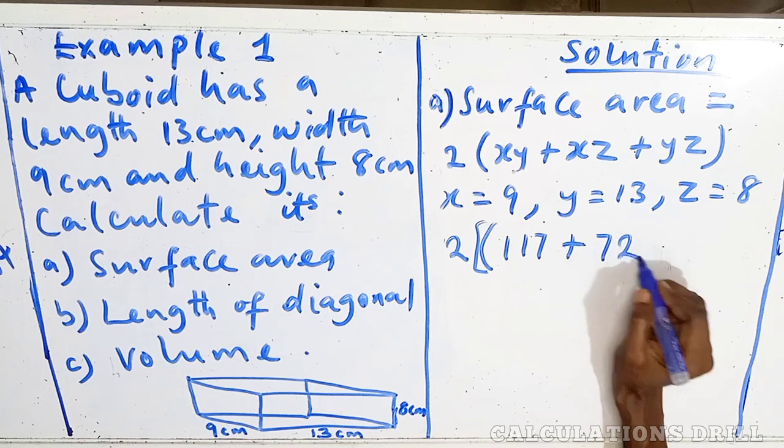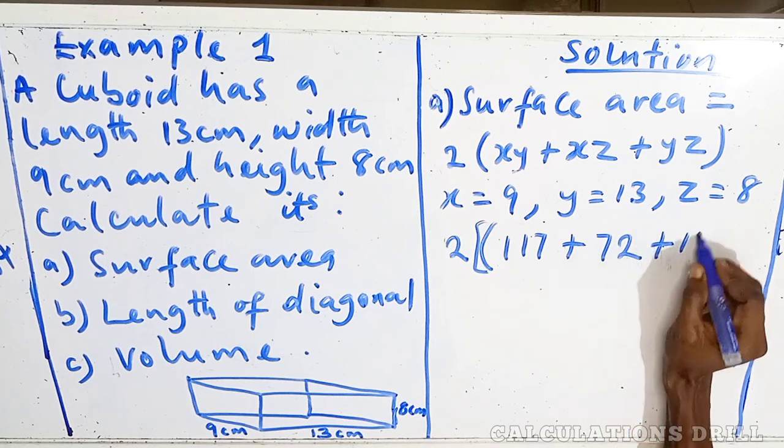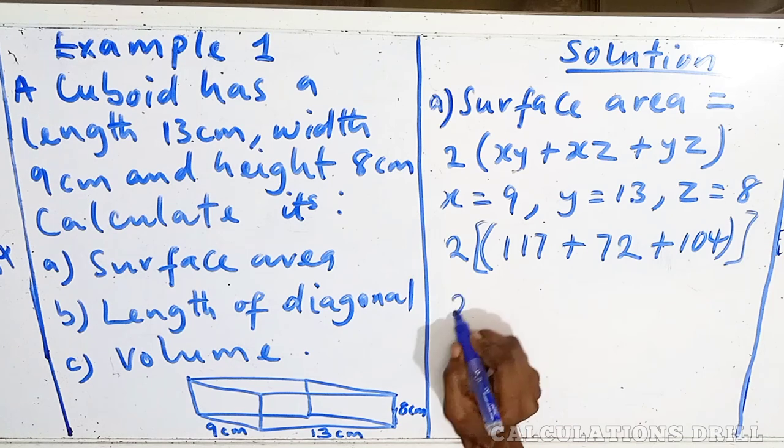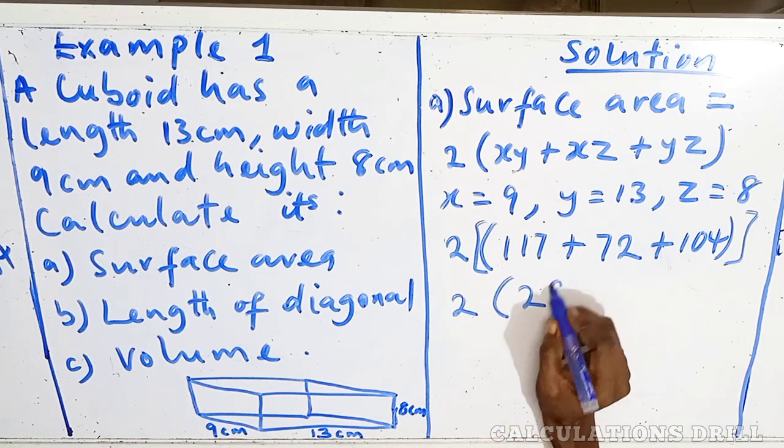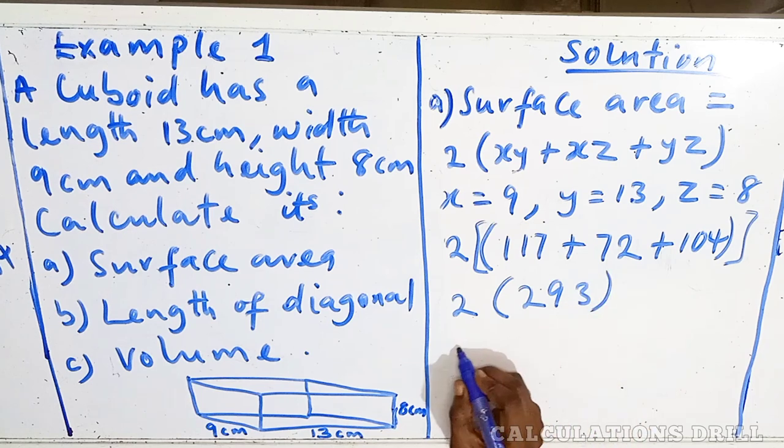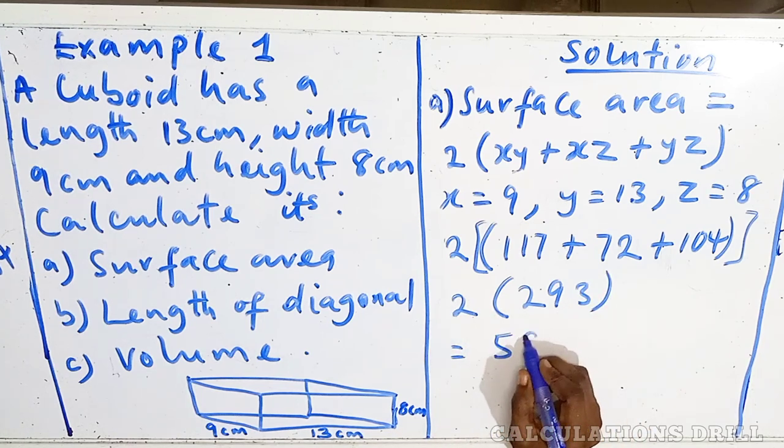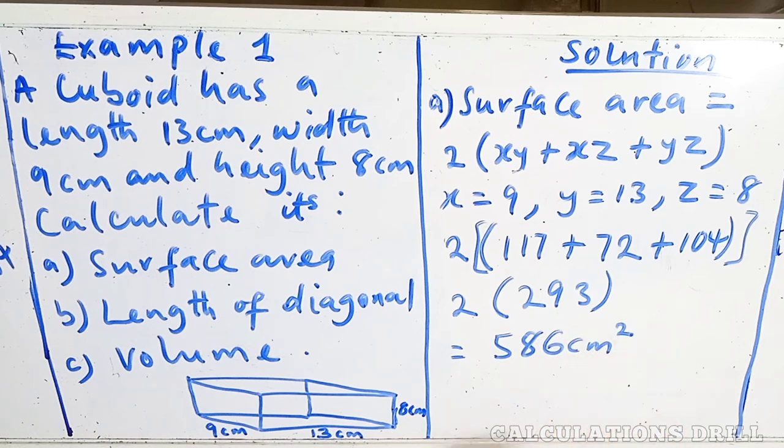Everything in bracket. So, 2 into bracket. When we add everything, it will give us 293. You multiply it by 2. Your answer will be 586 cm².